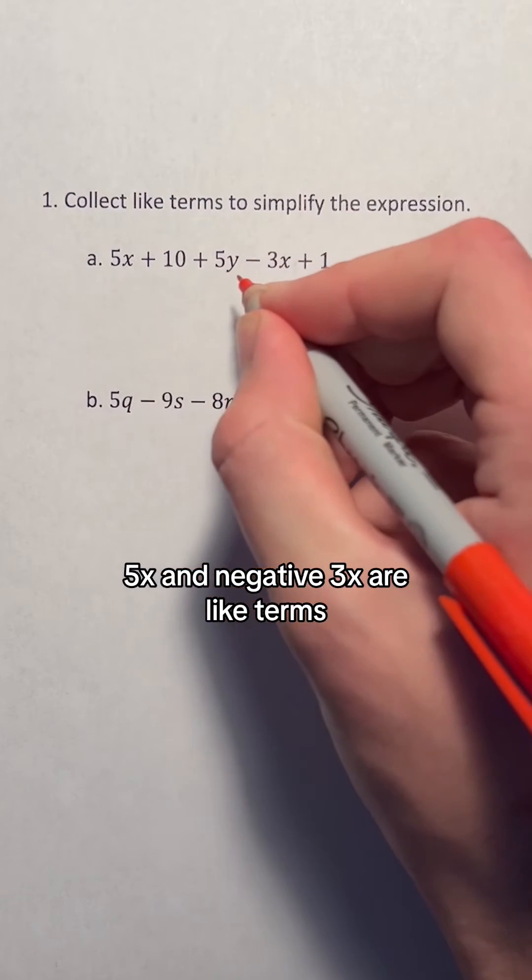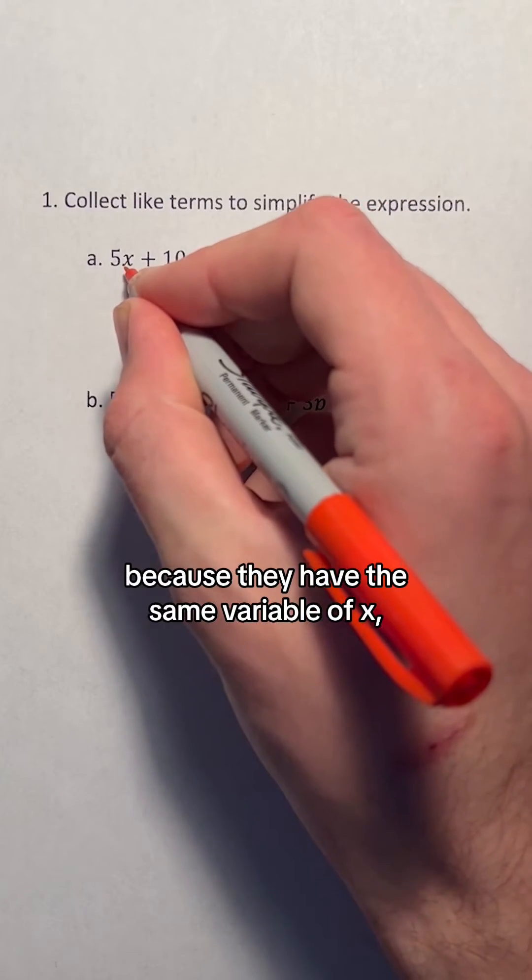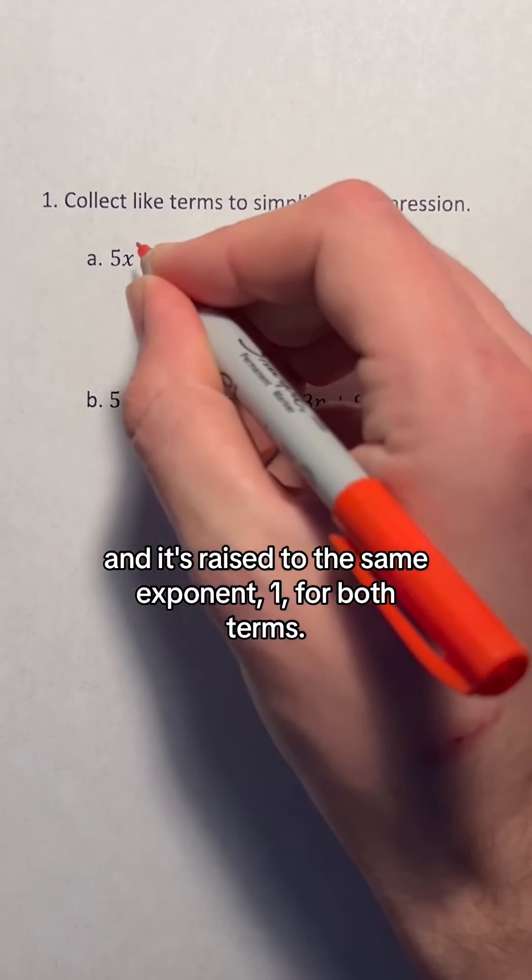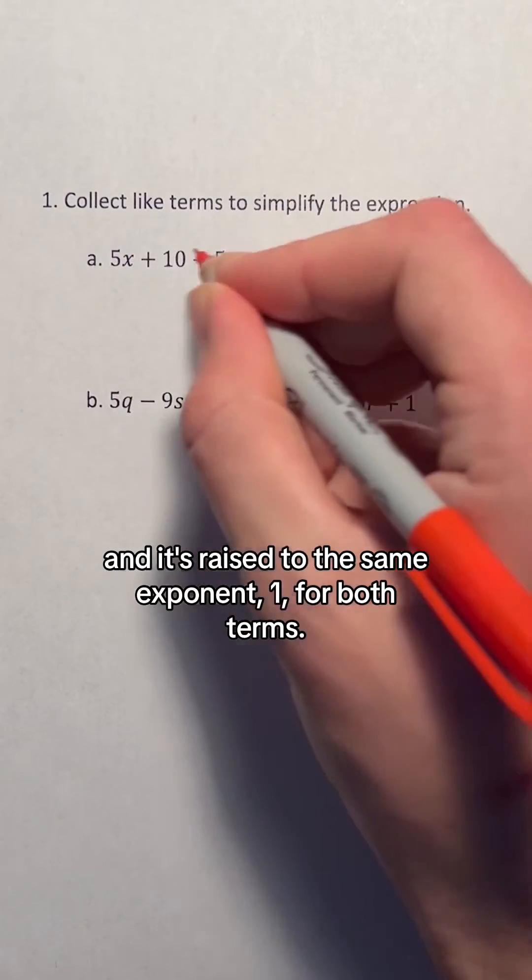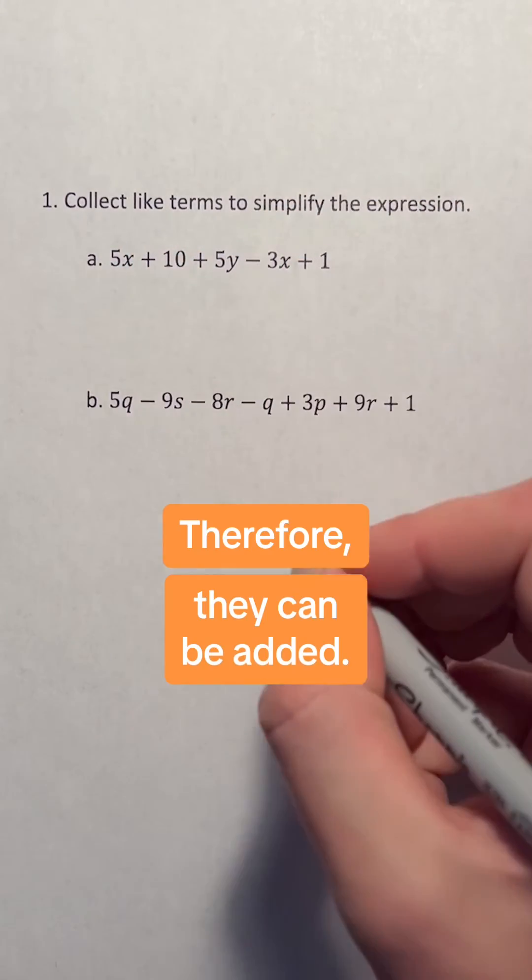In the first expression, 5x and negative 3x are like terms because they have the same variable of x and it's raised to the same exponent, 1, for both terms. Therefore, they can be added.